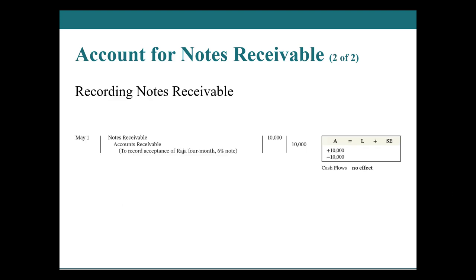To record a note receivable — in the example of receiving a note in place of an accounts receivable — think of SpongeBob saying 'I want to keep doing business with you.' You would flip the accounts receivable, remove it, and put it into a notes receivable. If it's Raha instead, you'd do the same, noting the interest rate. Nothing really changes — we go from one accounts receivable to another, but now we are going to be receiving interest on it.